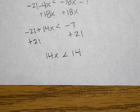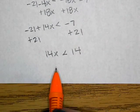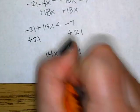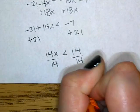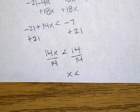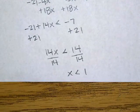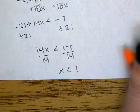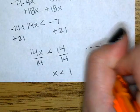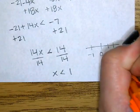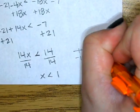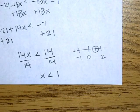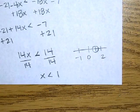From here we divide by 14, and x is less than 1. We did not flip the sign that time — why not? Because we divided by a positive, not a negative. So we didn't have to flip the sign. On the number line, draw a circle on 1 — don't fill it in — and the arrow goes to the left.